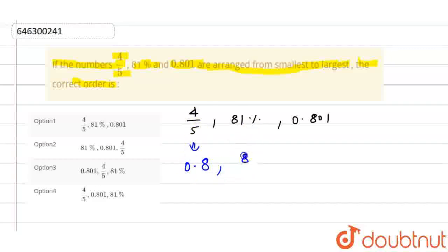How do we convert 81%? 81% means 81/100, and this equals 0.81. And this last one is already 0.801.